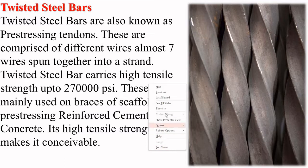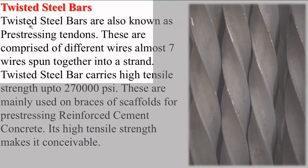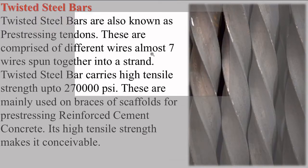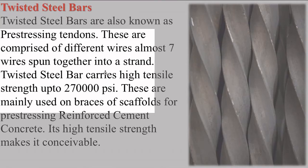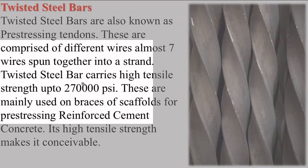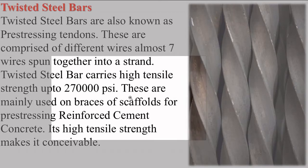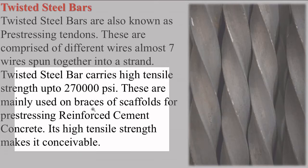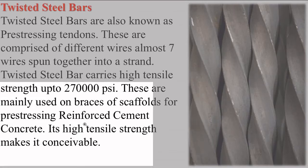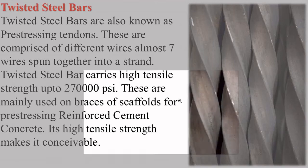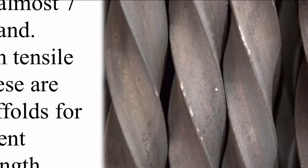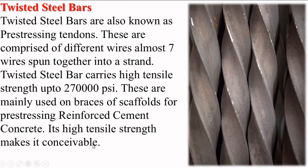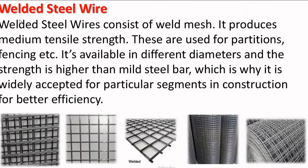Next is twisted steel bars. Twisted steel bars are also known as pre-stressing tendons. These are comprised of different wires — almost seven wires spun together into a strand. Twisted steel bars carry a very high tensile strength of up to 270,000 psi. These are mainly used for pre-stressing reinforced cement concrete, where their high tensile strength is highly advantageous.